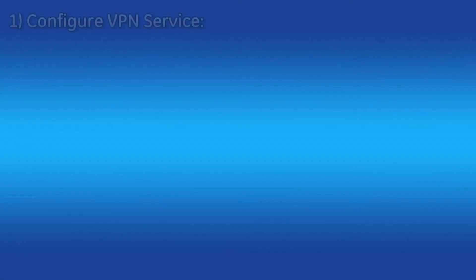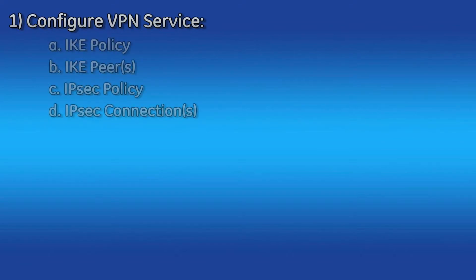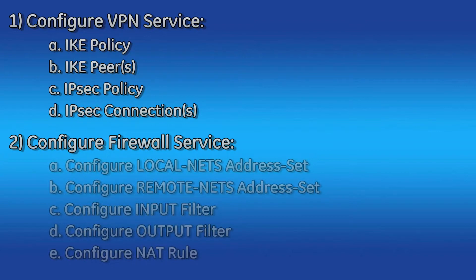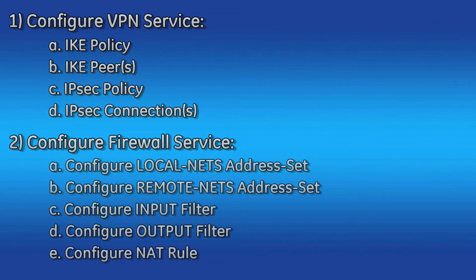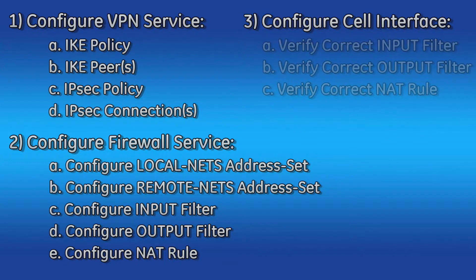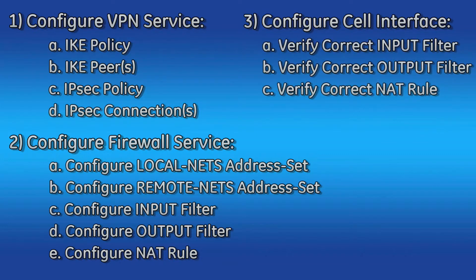Configuring IPSec on the Orbit MCR consists of the following steps. First, configure the VPN service, which includes IKE policy, IKE peers, IPSec policy, and IPSec connections. Second, configure the firewall service, including the local nets address set, a remote nets address set, an input filter, an output filter, and a NAT rule. Next, configure the cell interface, verify the correct input and output firewall filters, and verify the correct NAT rule.